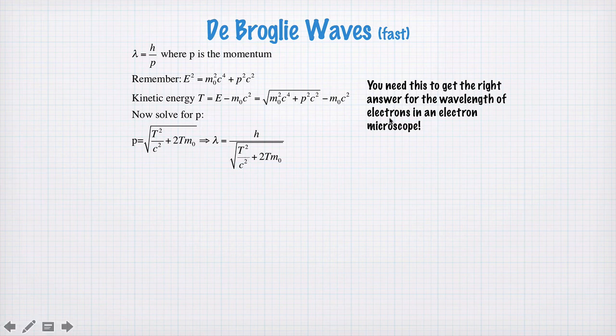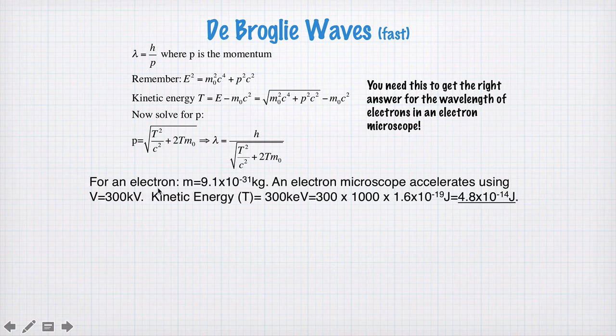So in order to get the wavelength of electrons in an electron microscope correct, sometimes you have to use this full relativistic expansion. So for an electron with this mass, an electron microscope has a typical acceleration voltage of 300 kilovolts. The kinetic energy is going to be 300 kiloelectron volts, or writing that out, we have 300 times 1000 times the charge of an electron in joules, which is about 4.8 by 10 to the minus 14 joules.